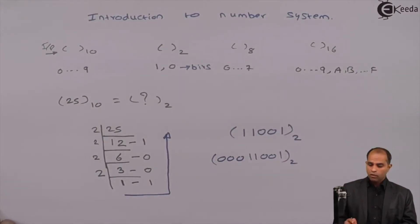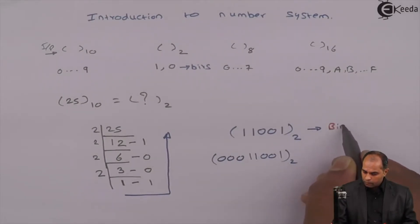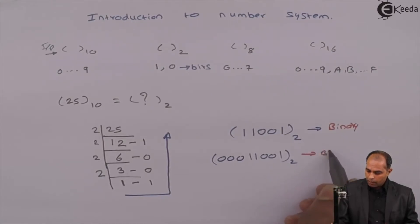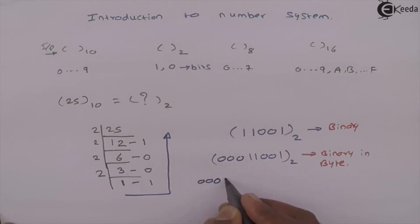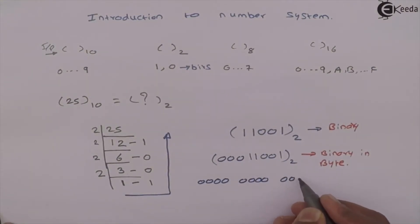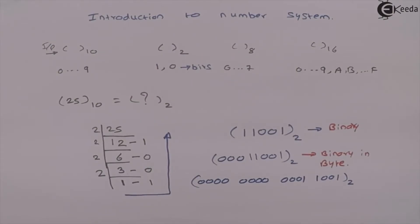Both representations are one and the same — there is no difference. 1 1 0 0 1 represents 25, and 0 0 0 1 1 0 0 1 also represents 25. The first is the raw binary value and the second is binary in byte format. If asked to do this in 2-byte format, 2 bytes represent 16 bits (since 1 byte is 8 bits). So we add an additional 8 zeros on the left. Making groups of 4 bits: 0000 0000 0001 1001 — this is the number in 2-byte format with 16-bit representation.